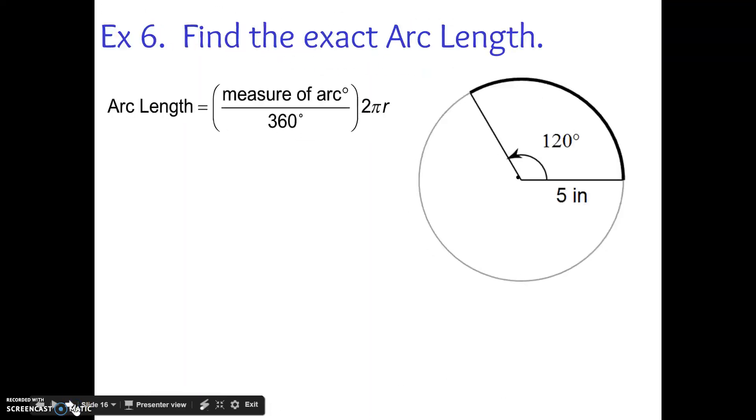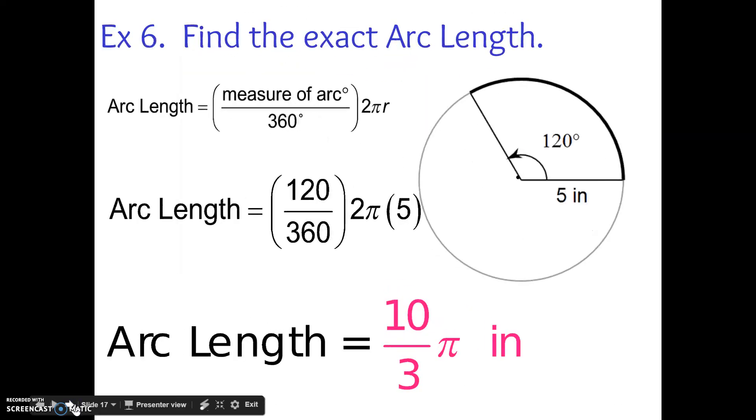So this time you're going to find the exact arc length, keeping pi in our answer. So let's try this one here. Notice I keep pi in my answer, but my angle is 120 degrees over 360 times 2 times pi times my radius, which is 5. Making my arc length 10 over 3 pi inches. And usually when we do have pi in there, we like to keep it as a fraction instead of writing decimals. But I would accept either answer on a quiz.